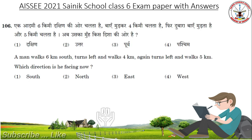A man walks 6 kilometers south, turns left and walks 4 kilometers, again turns left and walks 5 kilometers. Which direction is he facing now?